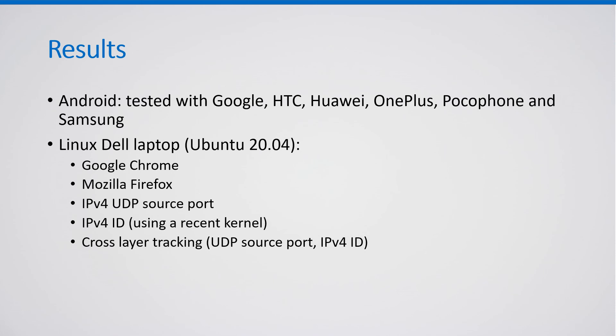We tested Android devices from Google, HTC, Huawei, OnePlus, Pocophone, and Samsung, as well as a Linux Dell laptop running Ubuntu. On the Linux Dell laptop, we demonstrated cross-browser tracking between Google Chrome and Mozilla Firefox. We also demonstrated cross-layer tracking with UDP source port at layer 4 versus IPv4 ID at layer 3.